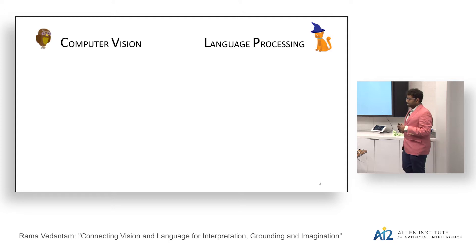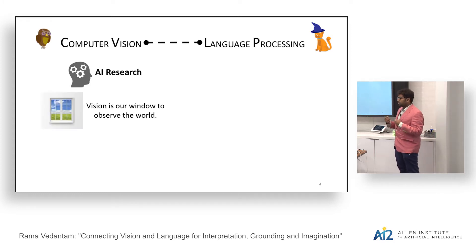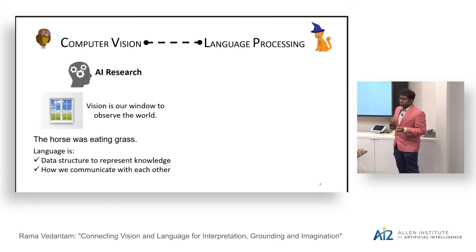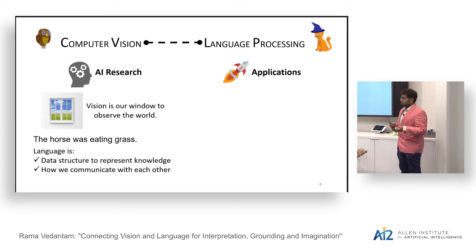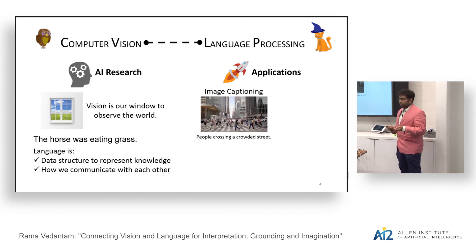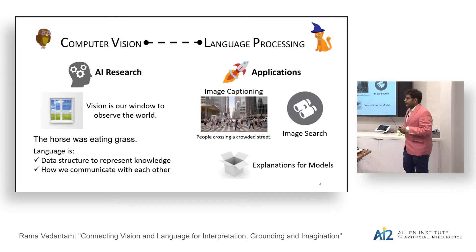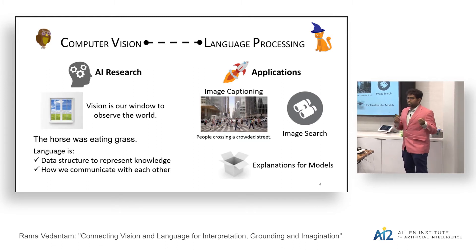The natural question is: are there interesting things we can do at the intersection of vision and language? Connecting vision and language is important from a high-level AI perspective because vision is our window to perceive the world, and language is, in some sense, our most common data structure to represent and communicate knowledge. There are also many practical applications — image captioning describes images in natural language, which is useful for visually impaired users, and image search connects vision and language very intimately.